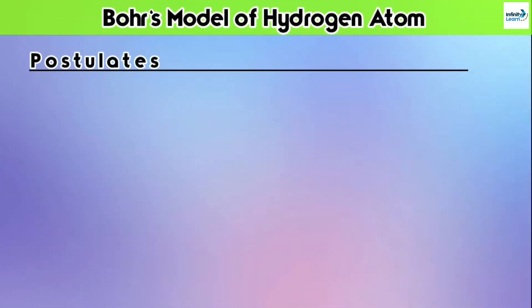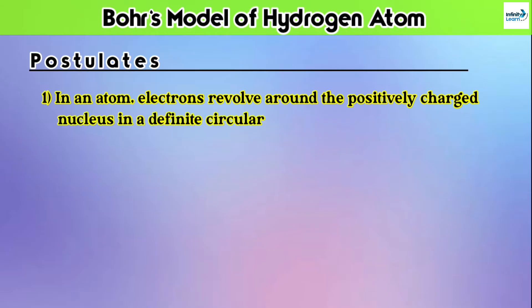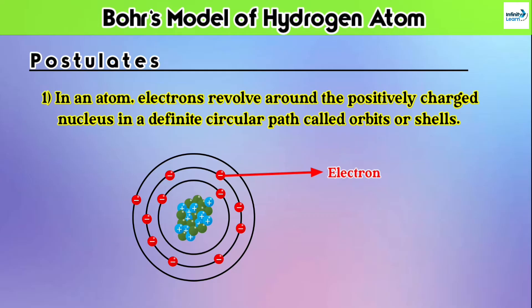The first postulate is: in an atom, electrons revolve around a positively charged nucleus in a definite circular path. In an atom, every electron has its own definite and circular path on which it revolves around the nucleus. It can't revolve at any given path; it only has one definite circular path for revolving around the nucleus, and those paths are called orbits or shells.